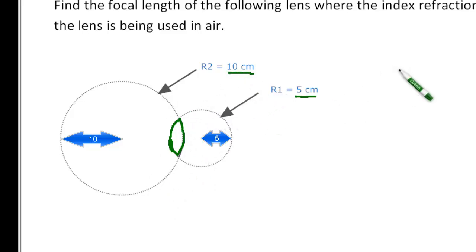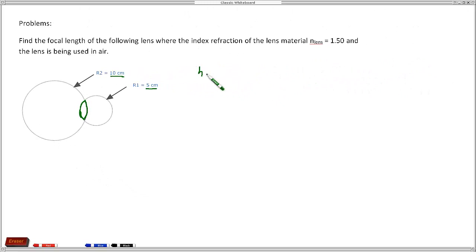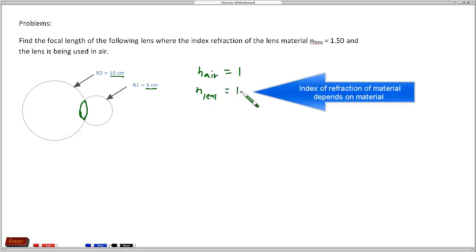And since the lens is being used in air, and most lenses are, the index of refraction for air as we know is 1. We're given that n for the material equals 1.5.